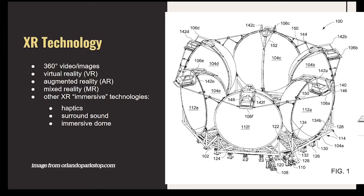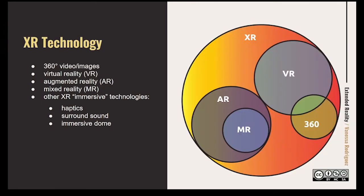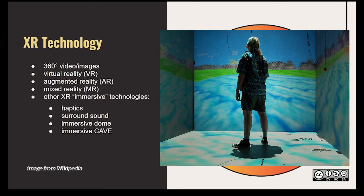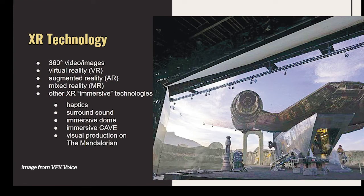An immersive dome — for example the Harry Potter Hogwarts ride or the Spider-Man ride at Universal Studios — is a giant dome with a projected video on it. Depending on where you stand, it looks like you're in that environment. The immersive cave is similar, just more like a room. I also want to mention the visual production on The Mandalorian: instead of using green screens, they projected the environment on LCD screens, so actors were really in the space and could see where their characters were, with things added in post-production.